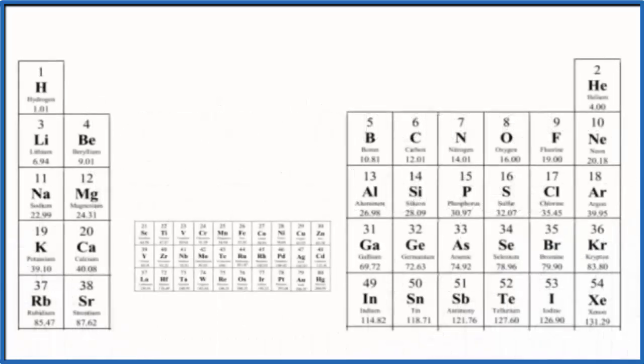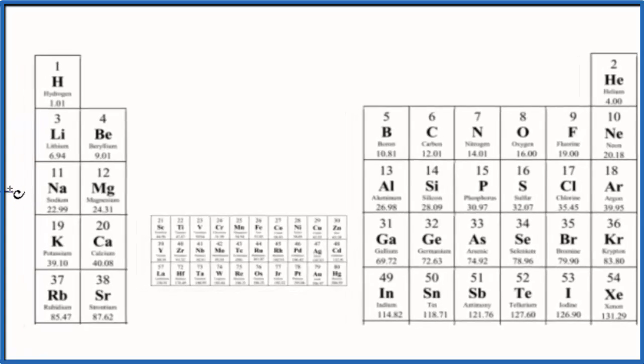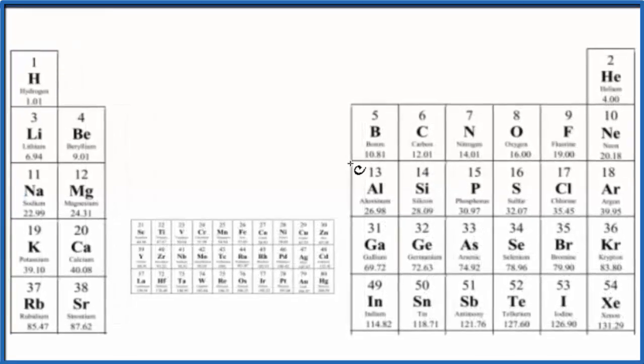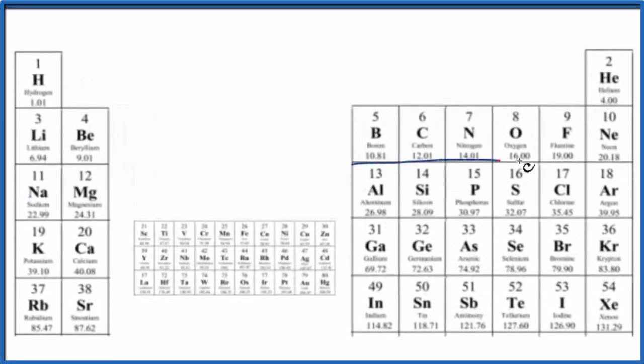When we talk about Lewis structures for expanded octets, we're going down one, two, three. This is the third period on the periodic table. So elements in the third period and below, mainly over here, can have expanded octets.